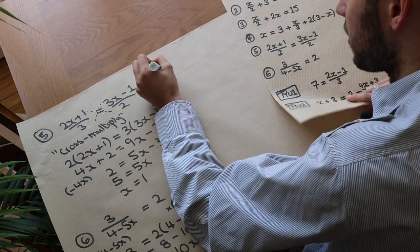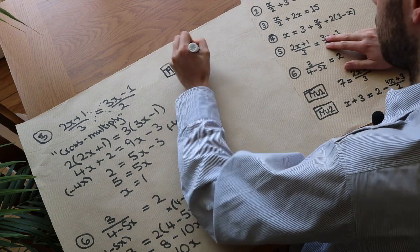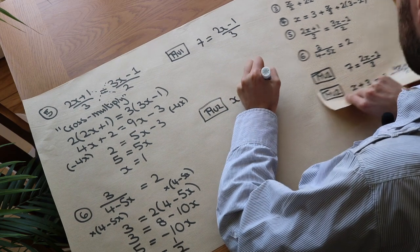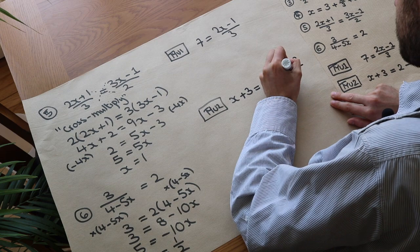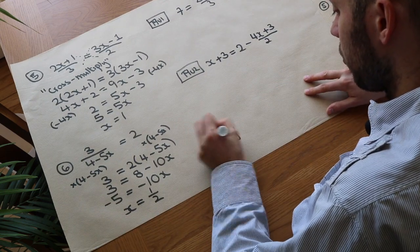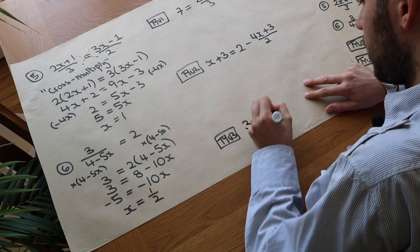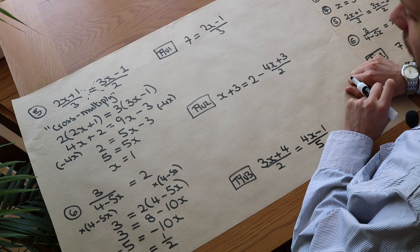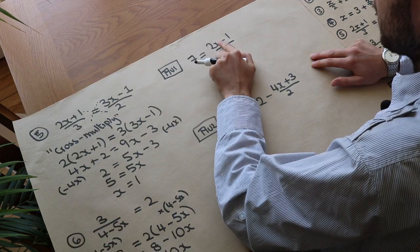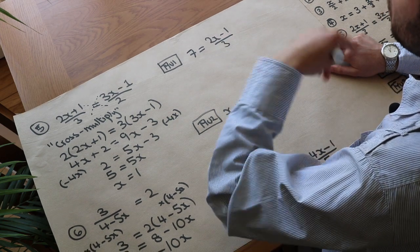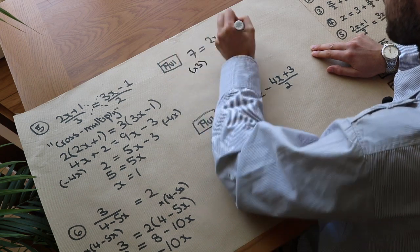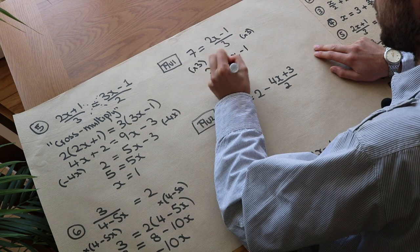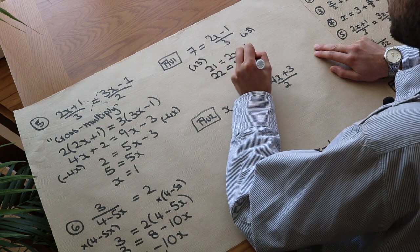Now for the practice questions. First: 7 is equal to (2x minus 1) over 3. Thinking about what's happening to x: it's been multiplied by 2, had 1 subtracted, and divided by 3. So we undo the divide by 3 first by multiplying both sides by 3, giving 21 equals 2x minus 1. Adding 1 to both sides gives 22 equals 2x, and dividing both sides by 2 gives x equals 11.